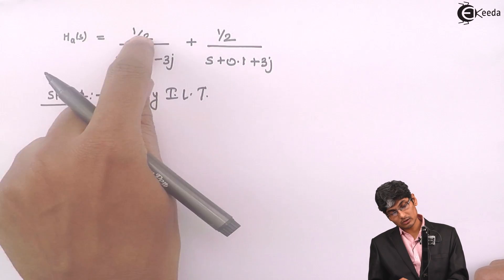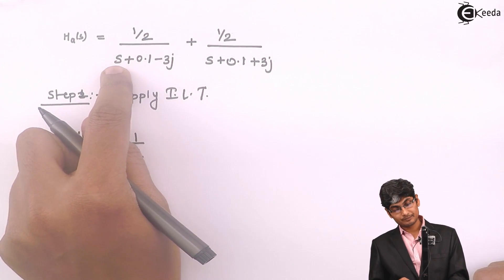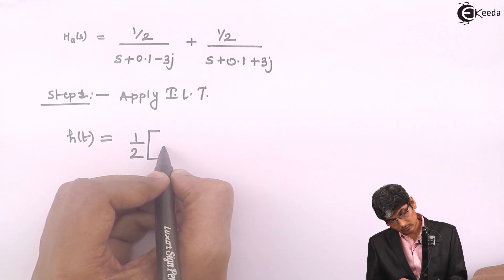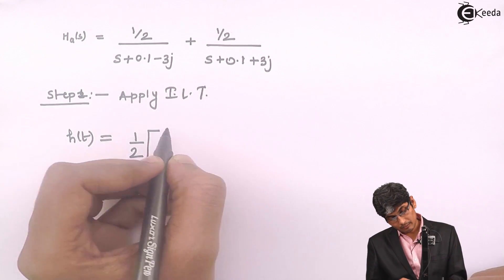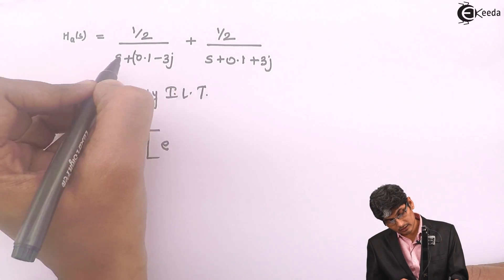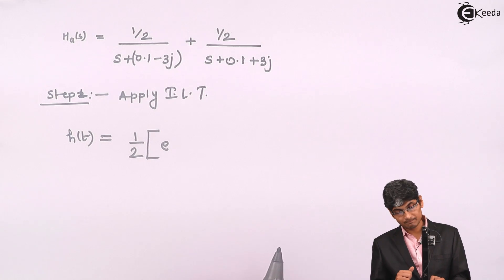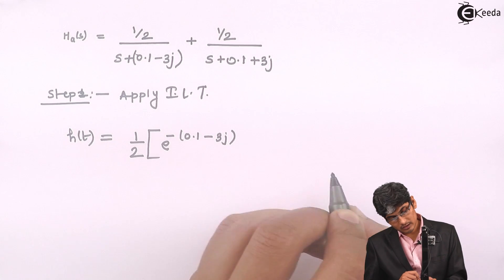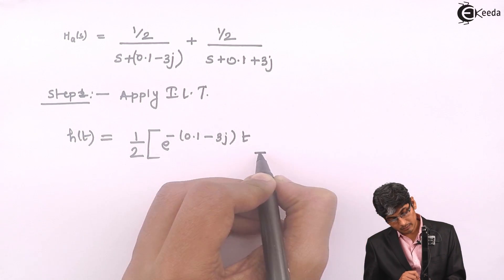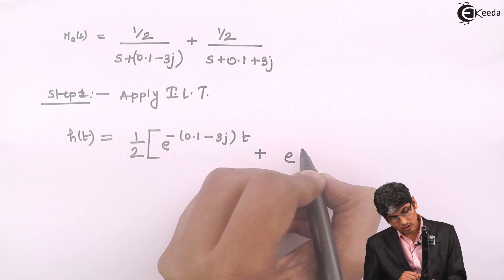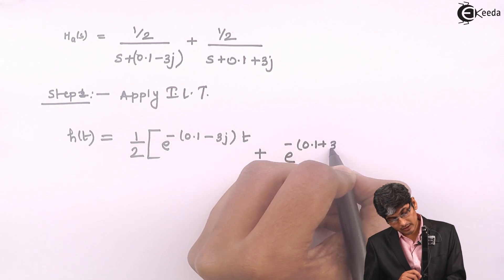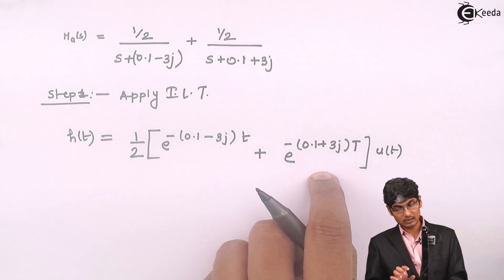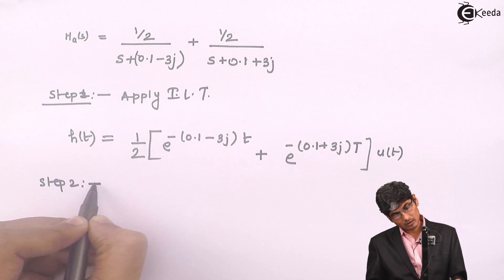H of T has the constant 1/2 coming out, and using the Laplace pair 1/(S plus a) transforms to e^(−at)·u(t). So H of T equals (1/2) times [e^(−(0.1−3J)t) plus e^(−(0.1+3J)t)] times U of T. That gives us H of T. Now in step 2, we apply sampling.